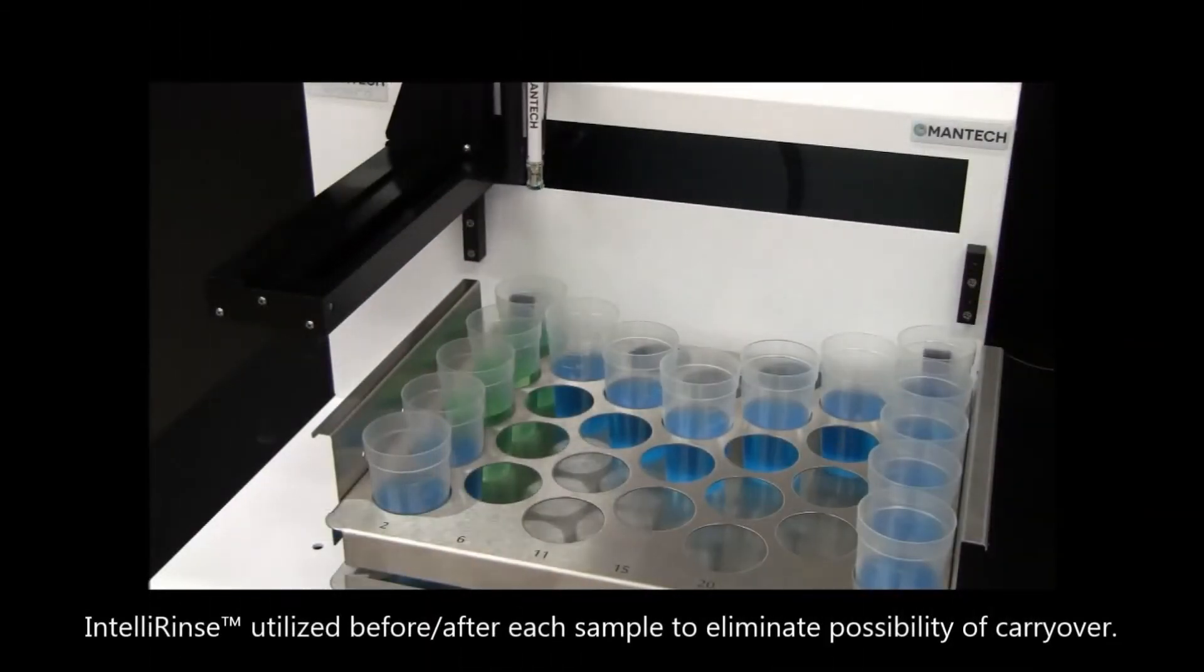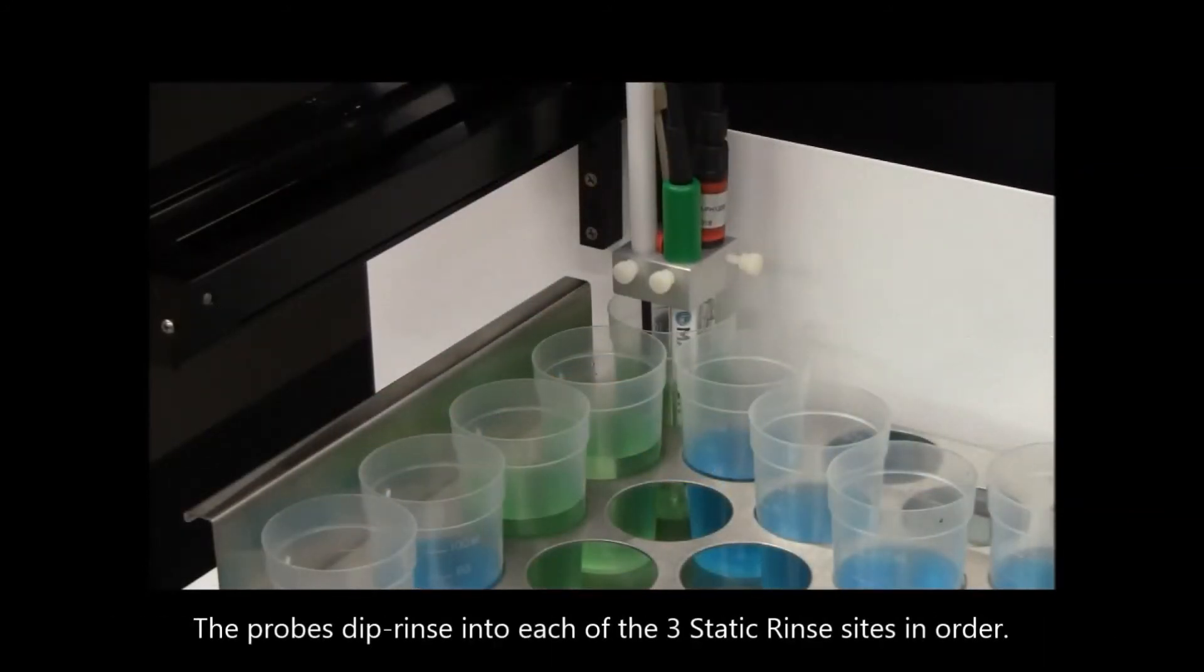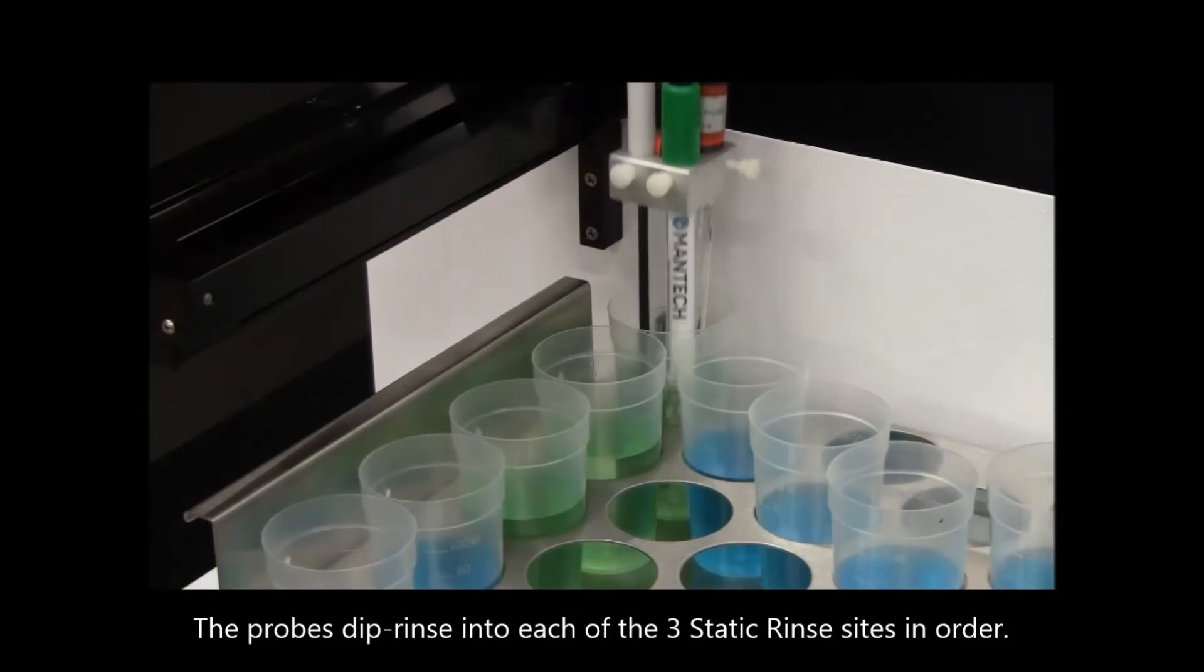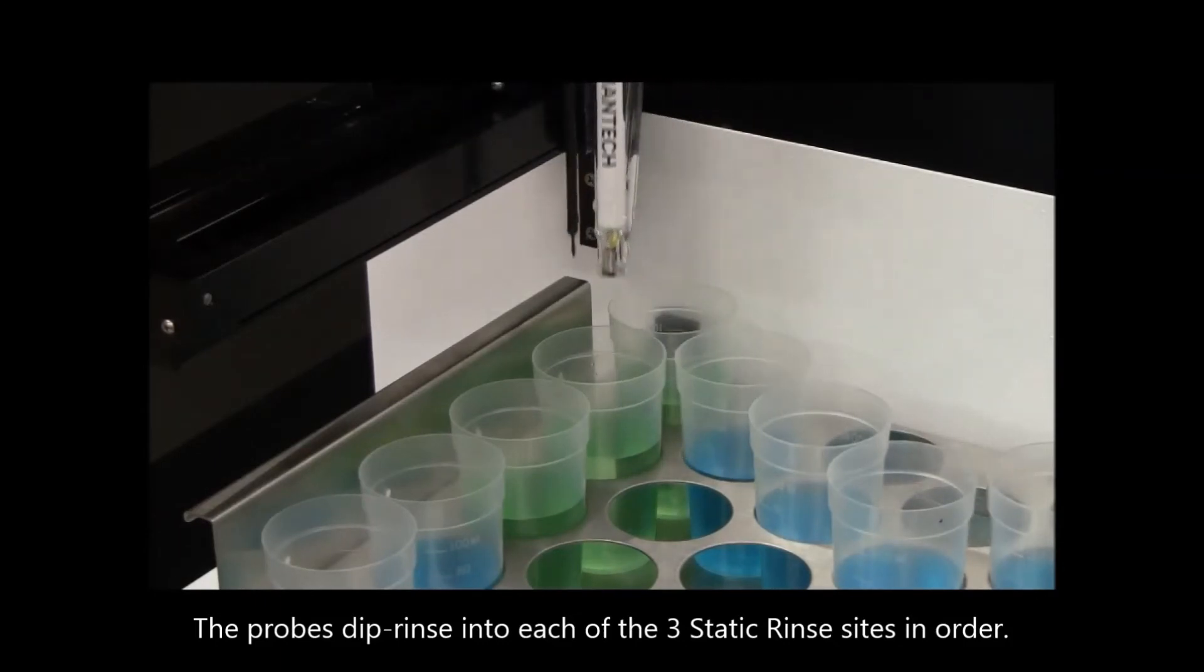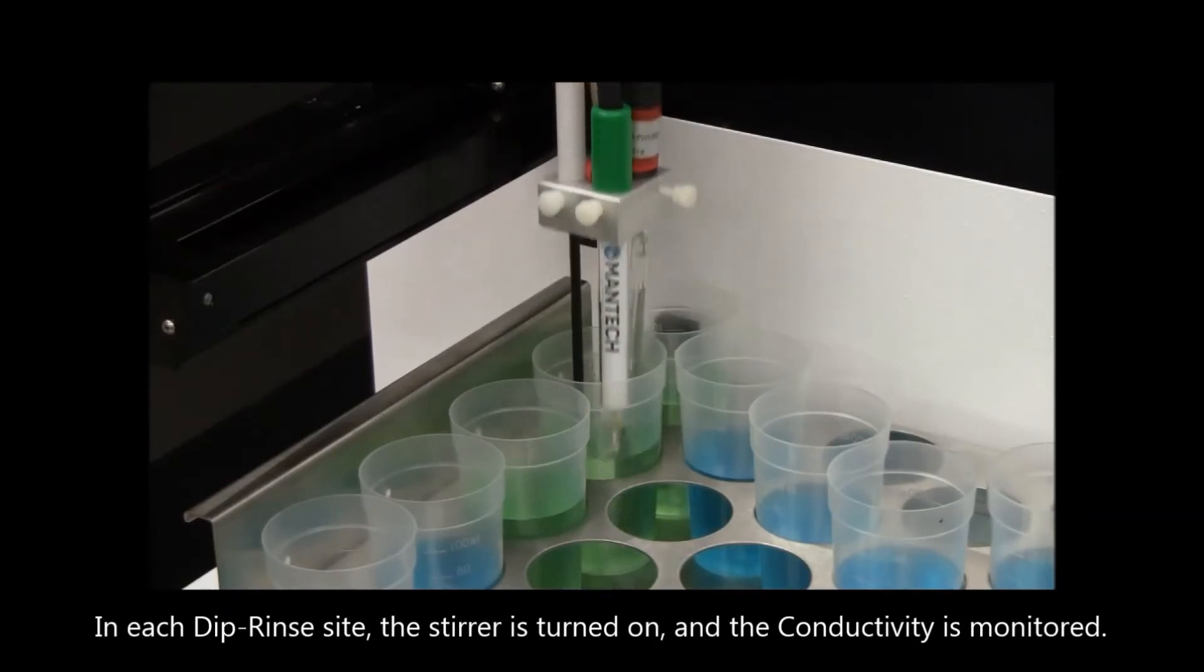IntelliRinse is utilized before and after each sample to eliminate carryover. The probes dip rinse into each of the three static sites in order. In each dip rinse site, the stirrer is turned on and the conductivity is monitored.